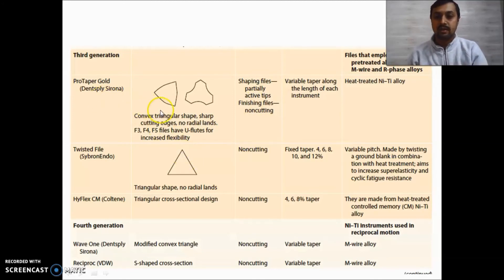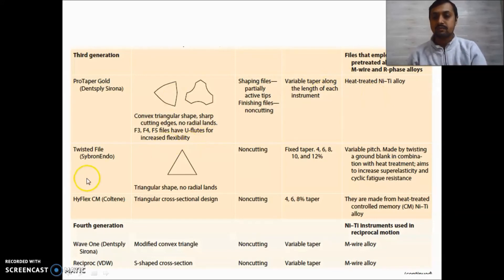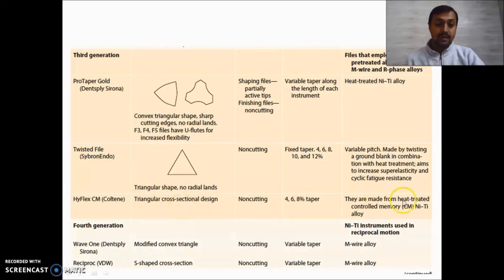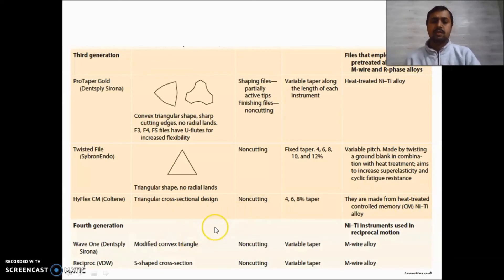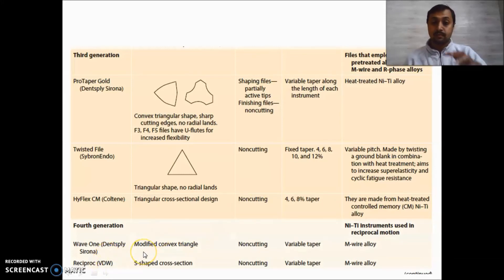In the third generation we have pre-treated files like the Empire, R-phase, and ProTaper. The shape is similar but the key change is that it is a heat-treated NiTi alloy. Twisted file has a silver Android triangular shape with no radial lands. HyFlex CM, made from heat-treated controlled memory NiTi alloy, has a triangular cross-sectional design.